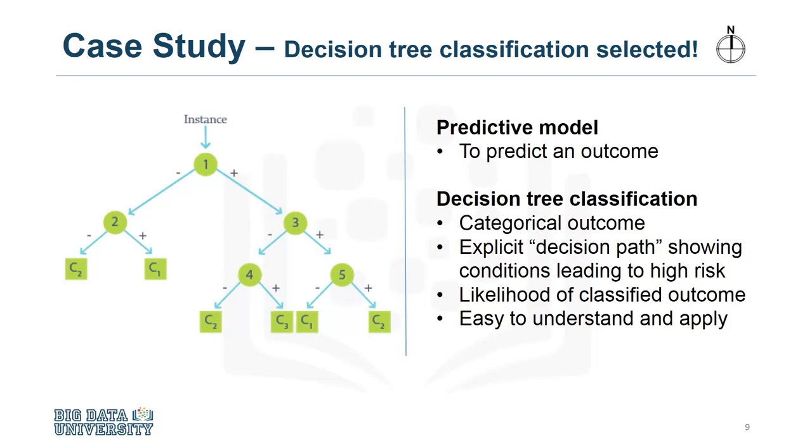From this information, the analyst can obtain the readmission risk, or the likelihood of a yes for each patient. If the dominant outcome is yes, then the risk is simply the proportion of yes patients in the leaf. If it is no, then the risk is one minus the proportion of no patients in the leaf.